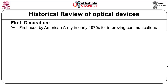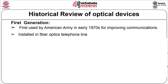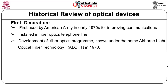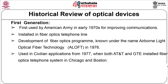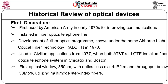Next, in 1976 they developed their own fiber optic program known as ALOFT — Airborne Light Optical Fiber Technology. In civilian applications they were used from 1977, when both AT&T and GTE installed fiber optic telephone systems in Chicago and Boston. The first optical window of 850 nanometer, with optical loss of about 4 dB per kilometer and throughput below 50 MB per second, utilizing multimode step-index fibers, was used.